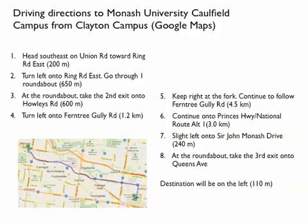Turn left onto Ring Road East, go through one roundabout, 650 metres. At the roundabout, take the second exit onto Howley's Road, 600 metres. Turn left onto Fendry Gully Road, 1.2 kilometres, and so on. Here we've got again a sequence of steps that we go through, and when we've reached the end, followed all of the steps one at a time, we'll end up at our destination. We will have followed an algorithm.